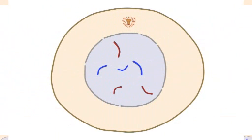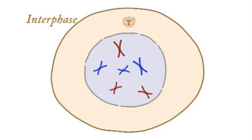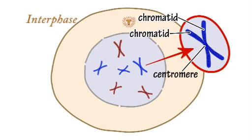Mitosis occurs in a number of stages, or phases. Prior to mitosis, during interphase, the DNA of each chromosome replicates, producing two sister chromatids per chromosome, joined together at a centromere.